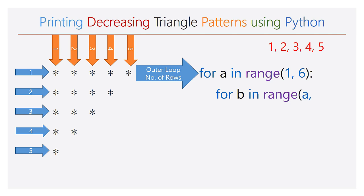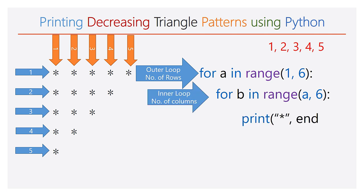The inner for loop has the range a to 6. The inner for loop is made as a function of the outer for loop. Based upon the value of the outer for loop, the inner for loop will be iterated. The print function with star and end attribute is used as an argument. An empty print function is used so as to start printing any characters on a new line after completing the inner for loop.